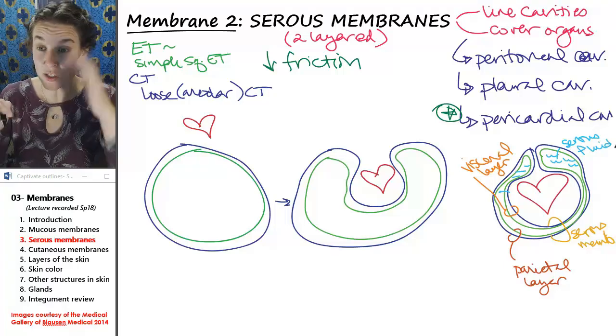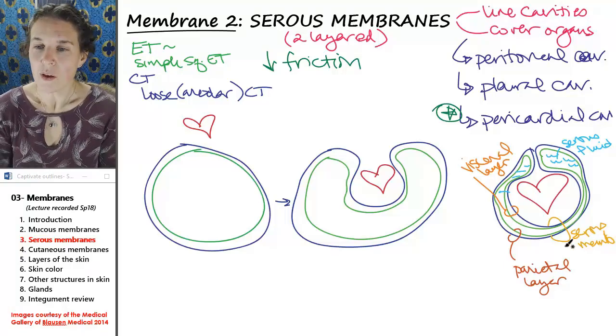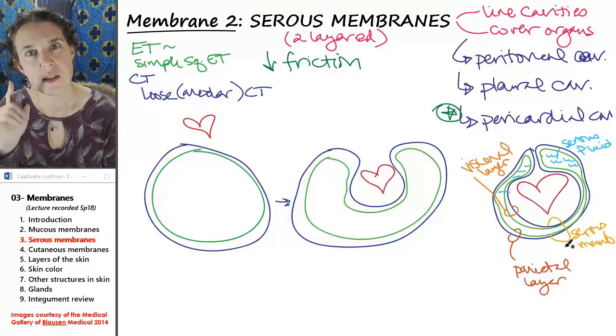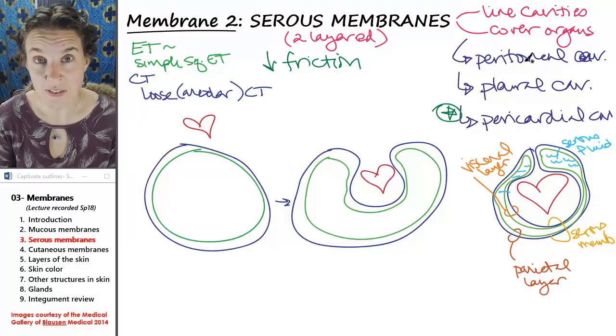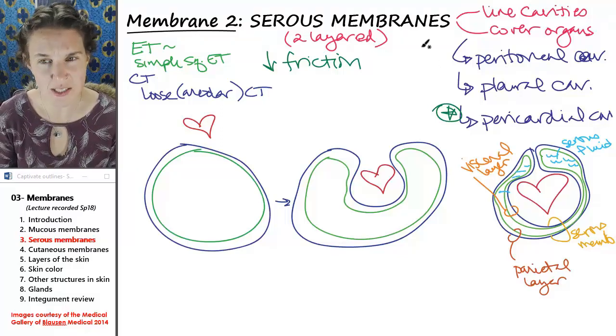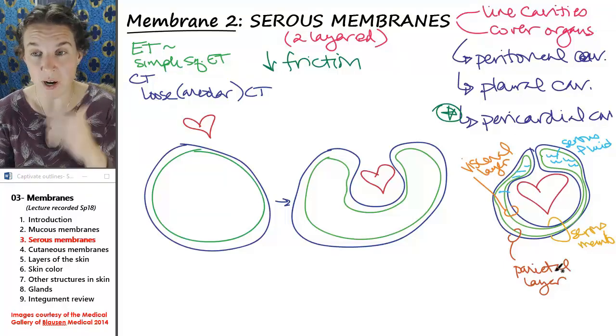The serous fluid is what is reducing that friction. The nice thing is all three of my cavities that are associated with serous membranes have visceral layers and parietal layers.